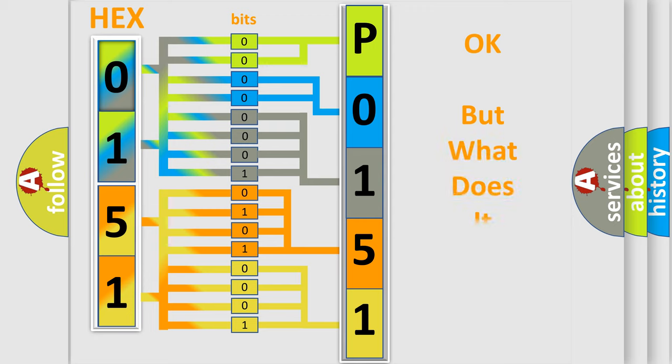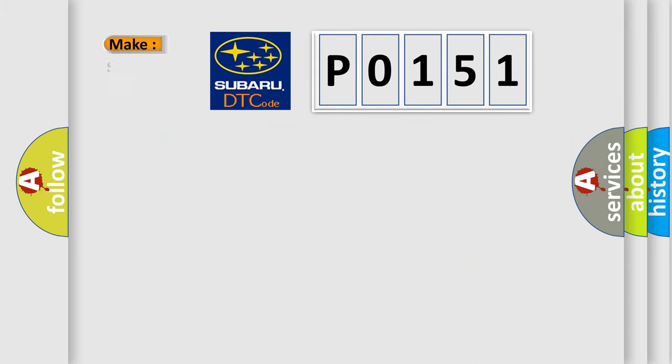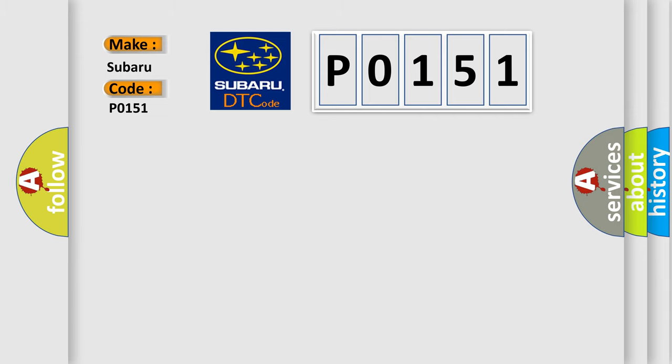The number itself does not make sense if we cannot assign information about what it actually expresses. So, what does the Diagnostic Trouble Code P0151 specifically mean for Subaru? The basic definition is: Oversteering signal not available from brake 3 message - signal plausibility failure.